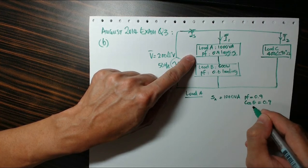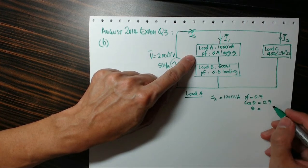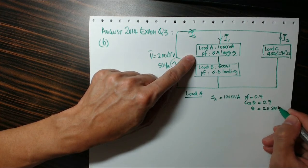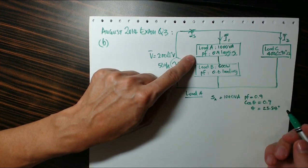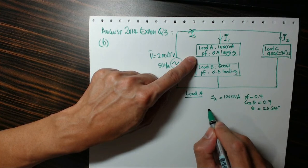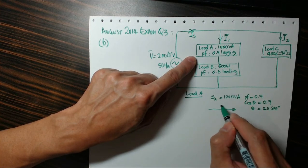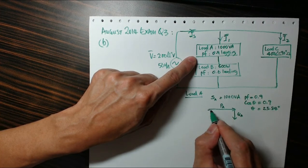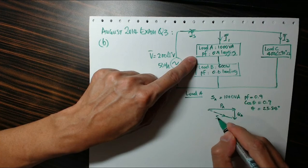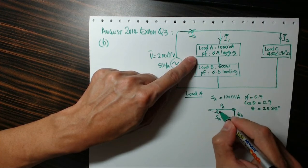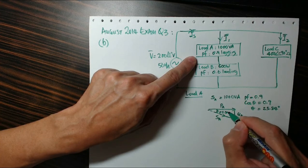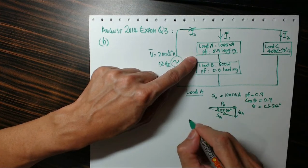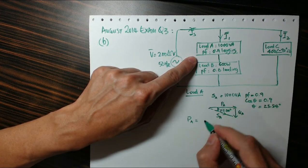Now if I have a power factor of 0.9, means that the power factor phase angle theta is actually cos inverse, that's 25.84 degrees. In other words, if I were to draw a power diagram, now this is lagging, so lagging means the real power is this way, the reactive power is this way, and the apparent power is this way, and the angle here is 25.84 degrees.